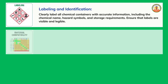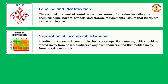Separation of Incompatible Groups: Identify and separate incompatible chemical groups. For example, acids should be stored away from bases, oxidizers away from reducers, and flammables away from reactive materials.